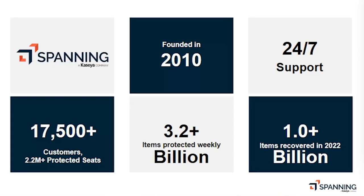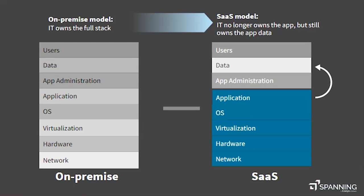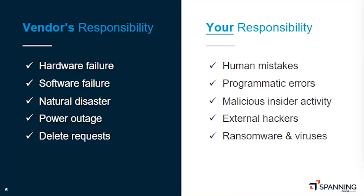We have over 17,000 unique customers with almost 2.2 million seats being protected. In 2022 we helped customers test and restore to production over a billion items. An important point when you move from that legacy on-premises model to SaaS, IaaS, and PaaS: regardless of what vendor or layer of technology you're using, it always falls on your shoulders to ensure that human errors are addressed.